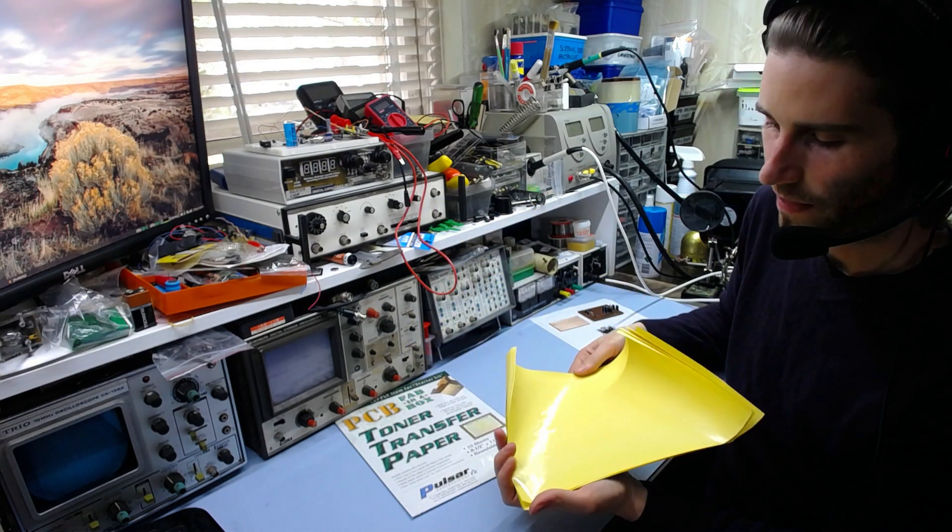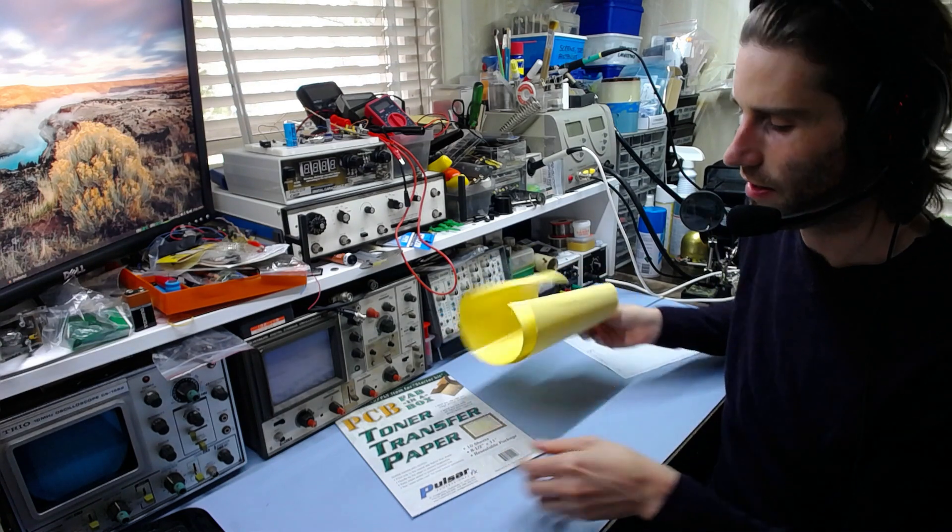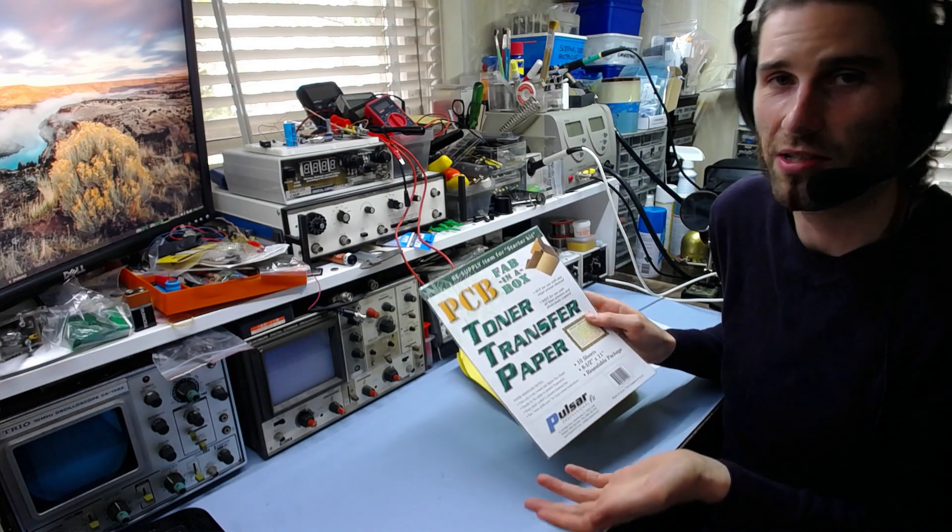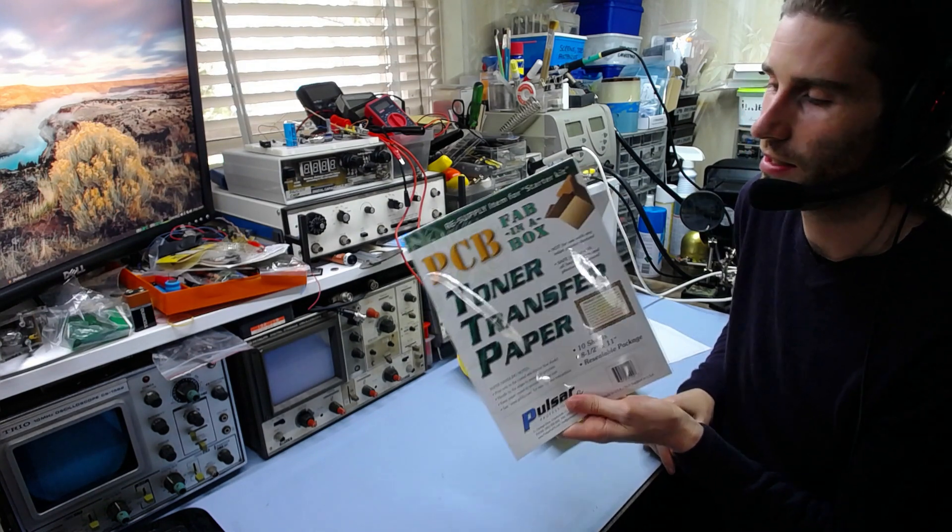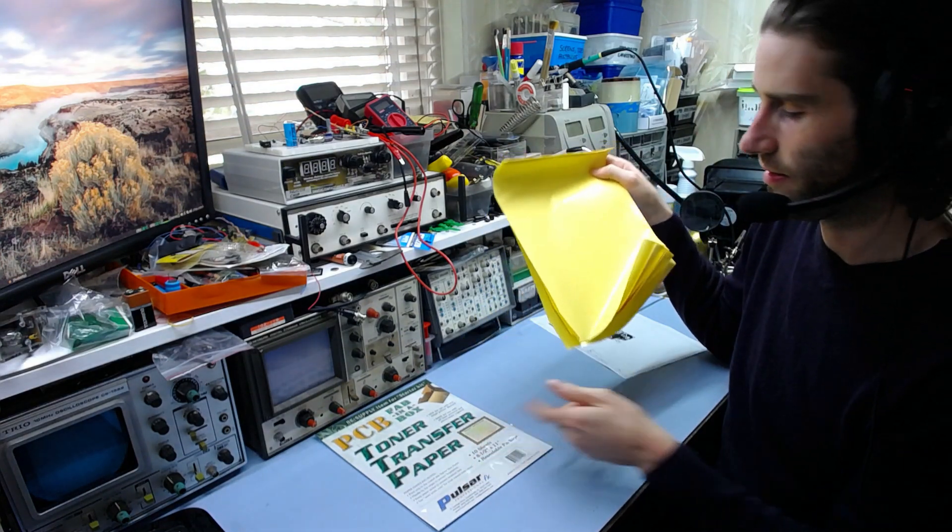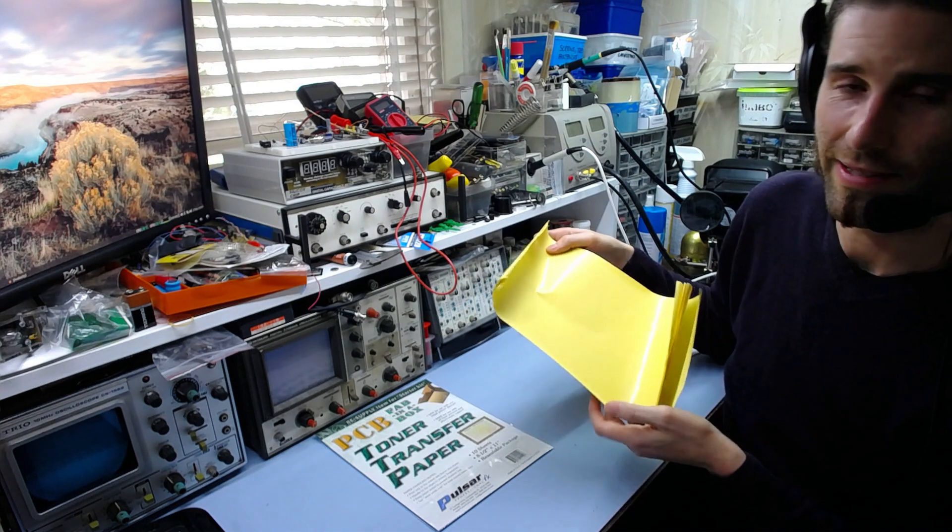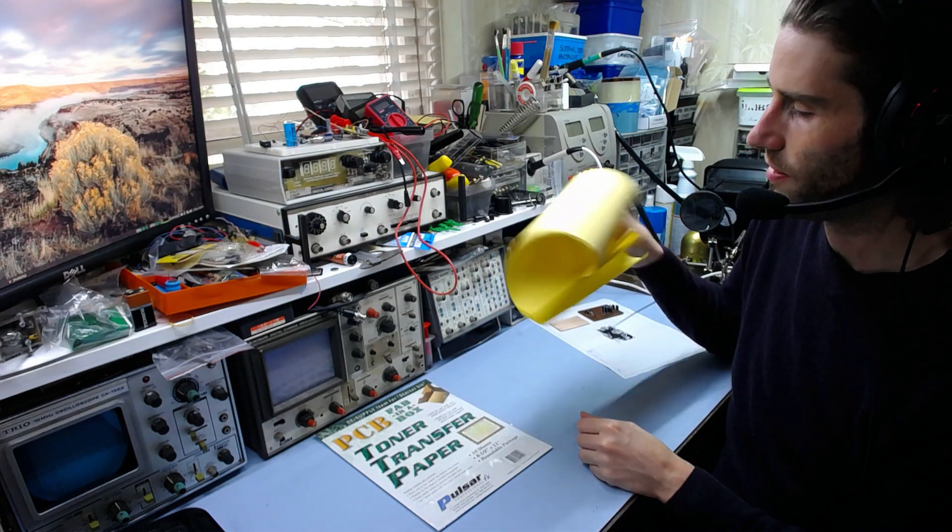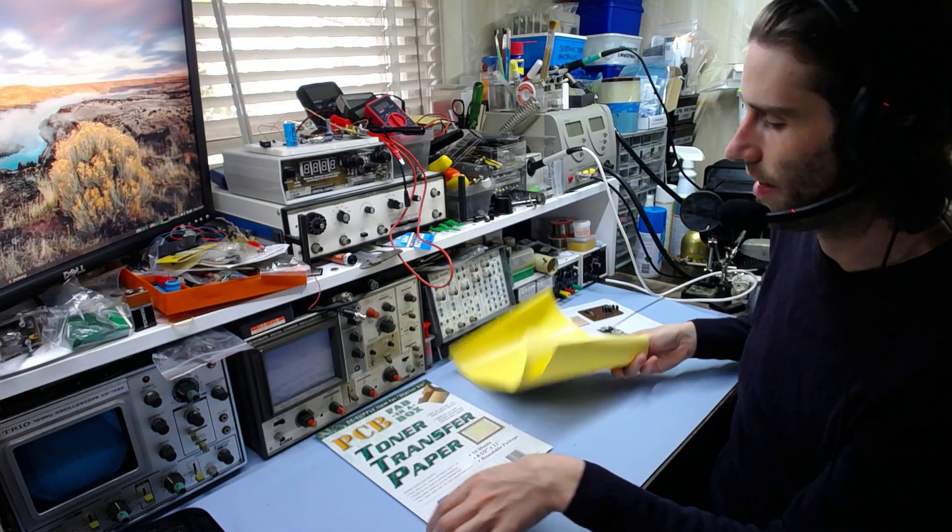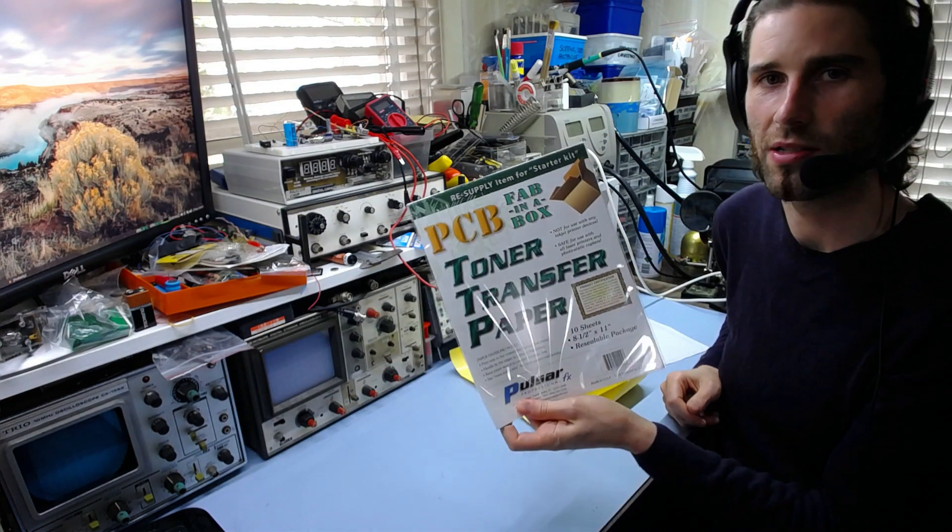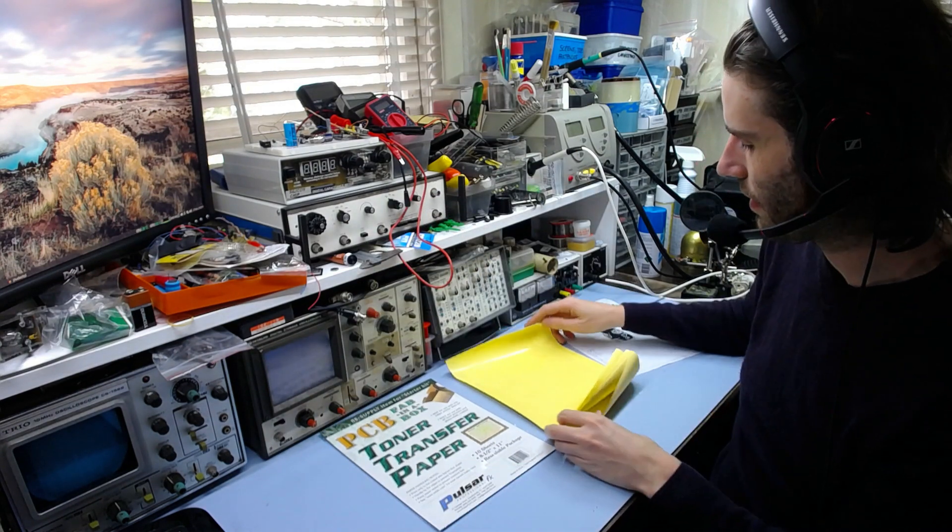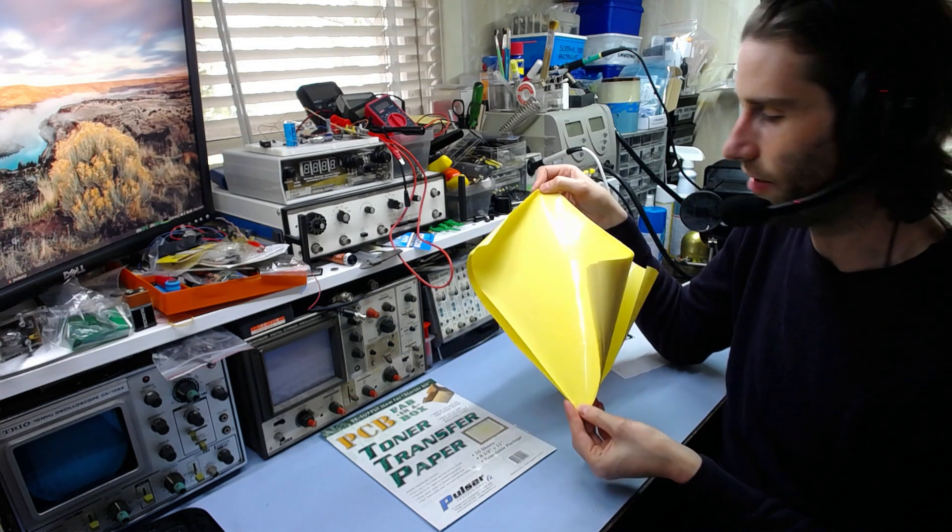Now this stuff is significantly cheaper than the Pulsar Pro FX stuff, which I've been previously using and recommend because it's really good. But this is probably about 10 times cheaper. I got these 10 sheets for $2.50 New Zealand, whereas this is about $15 US for 10 sheets. So you can see this one's significantly cheaper. But the question is, is it any good?